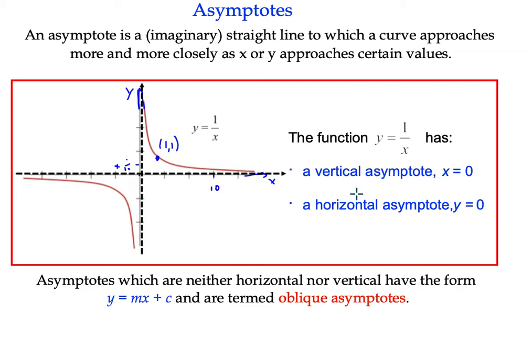And some functions don't have a horizontal asymptote. Their gradient is not 0. The gradient would be positive or negative. They would be sloping at some angle from the horizontal. And we call these oblique asymptotes.